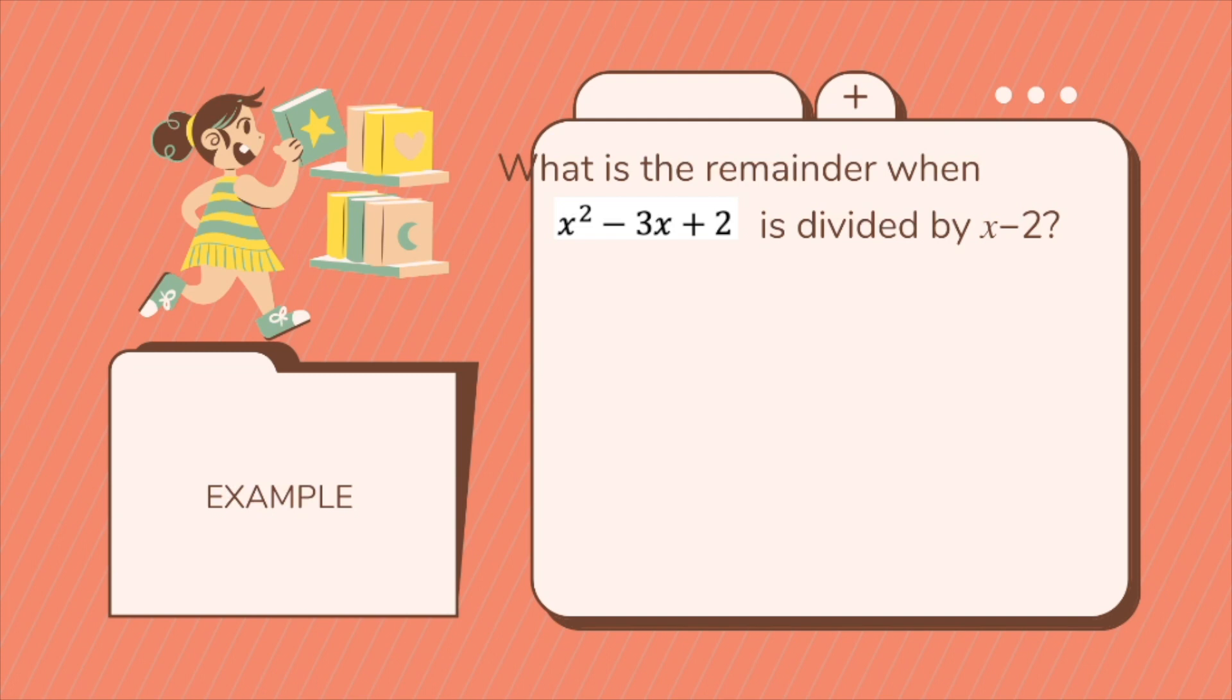What is the remainder of x squared minus 3x plus 2 when it is divided by x minus 2? So how do we do it? First, that's x minus 2, hence you'll have x equals to 2. So that means your f, your x, you substitute it with 2. So that's x squared.